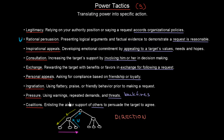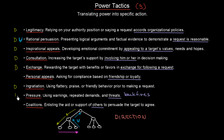Now let's think about downward communication — from CEO to manager, or from manager to employee. Here we can use legitimacy, rational persuasion, inspirational appeals (which should be part of a manager's job), and consultation to involve employees in decision making. We can also use exchange, ingratiation, and pressure in downward communication. Personal appeals and coalitions, however, don't fit the downward direction.